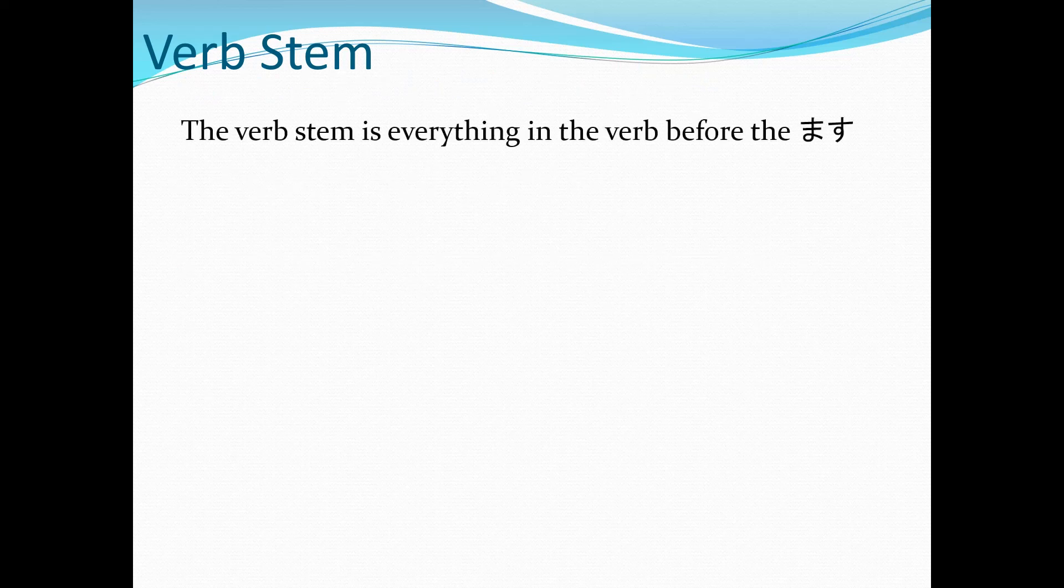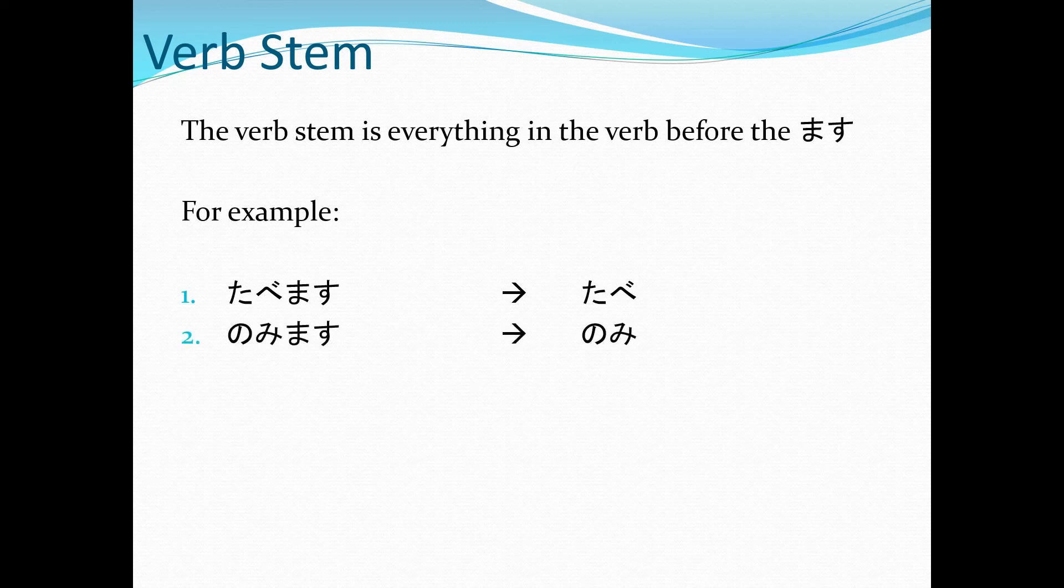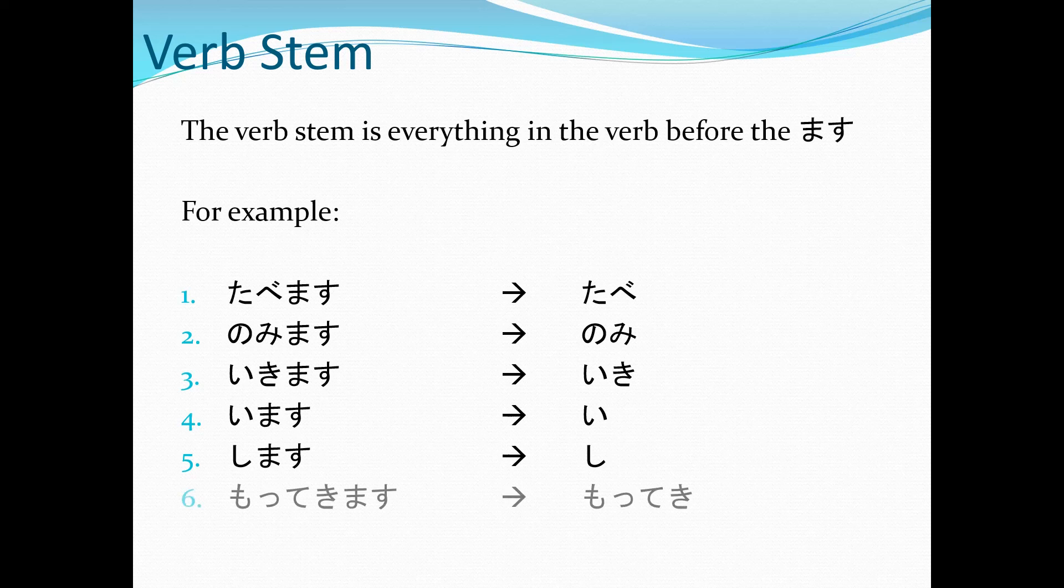It is just everything in the verb before the ます. For example, 食べます—the verb stem would be 食べ. 飲みます—the verb stem would be 飲み. 行きます—the verb stem is 行き. 言います—the verb stem is 言. します—the verb stem is し. 持ってきます—the verb stem is 持ってき. So everything, just delete the ます and then that's the stem.